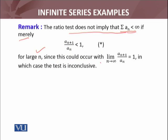Since this could occur with limit as n approaches infinity, the terms of this sequence can be less than 1, but the limit of your sequence a_{n+1} over a_n can be 1. The ratio test is inconclusive if the limit of that sequence equals 1, in which case the test is inconclusive.